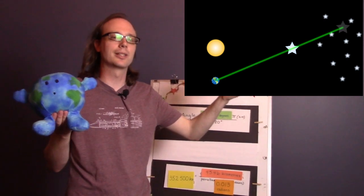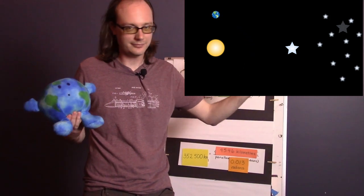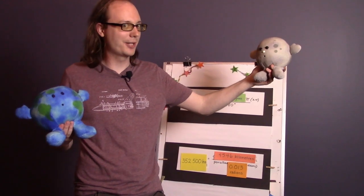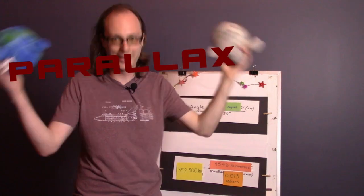Instead of having two cities, we would actually use the one side of Earth's orbit, and the other side of Earth's orbit to get the parallax angle. So that we can measure very great distances using the method of parallax.